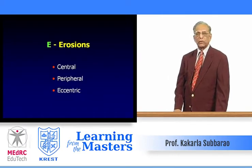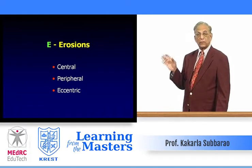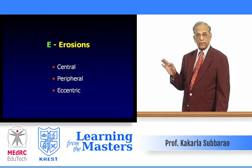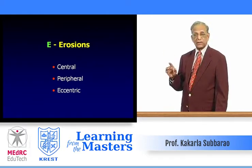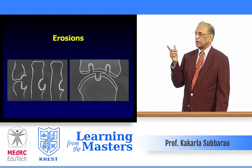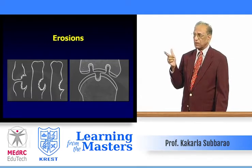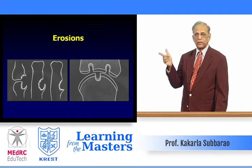Now E — erosions. Erosions may be central, peripheral, or eccentric as in gout. Look at the erosions in gout — they are eccentric. They may occur not only in the subarticular area but also distal to the joint, extending into the shaft.